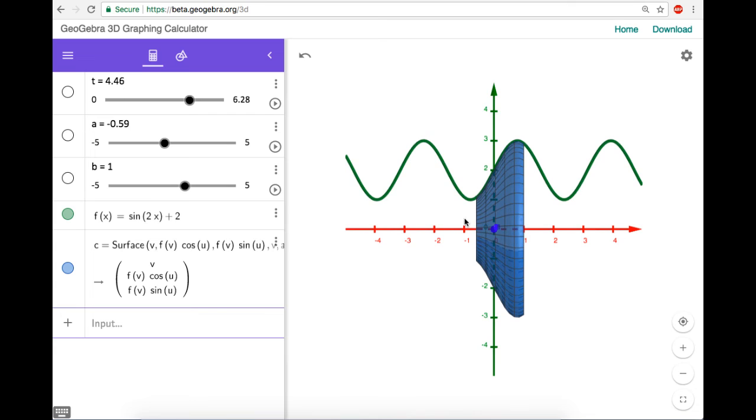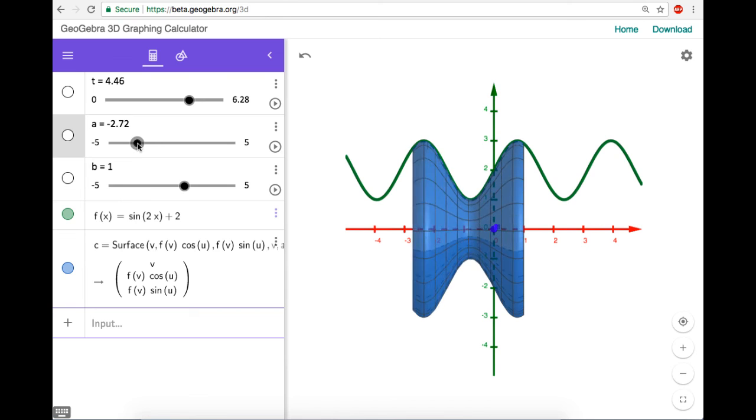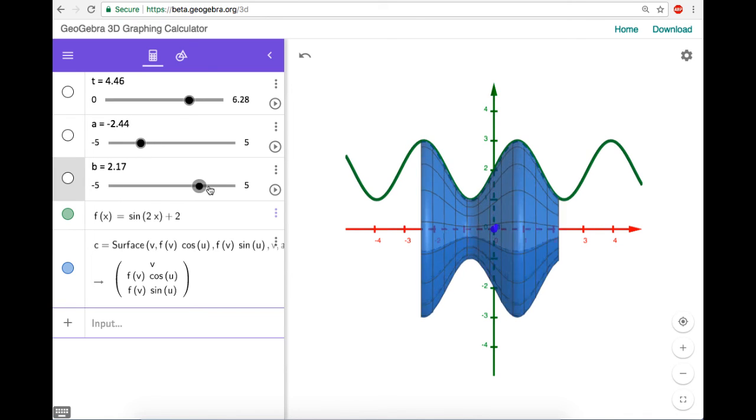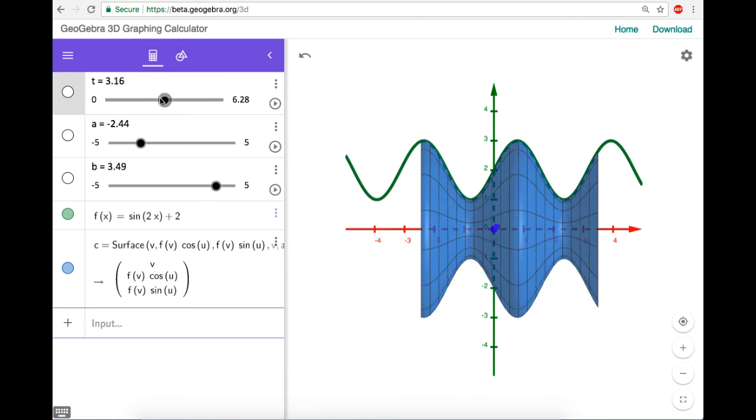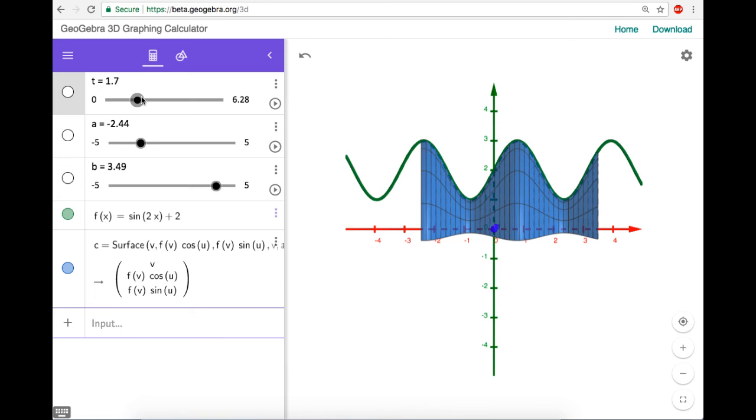here we go. So this is our curve, and we're rotating it around the x axis. And if I change the value of a, I see more of it. If I change the value of b, I'll see more of it.